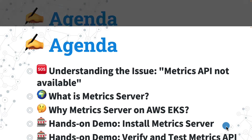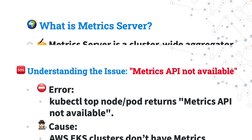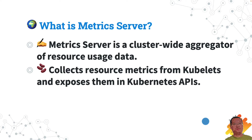Let's talk about the issue: metrics API not available. When you're working with AWS EKS and running into the metrics API not available error, it can be frustrating. This issue happens because the metrics API, which provides insights into resource usage, is not accessible. This occurs because AWS EKS clusters do not automatically come with the metrics server.